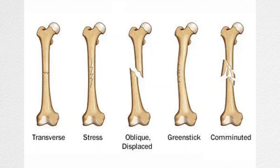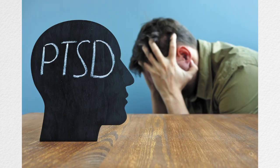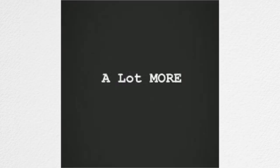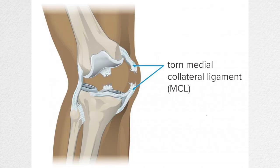Fractures are when bones undergo a tremendous amount of stress and break. This can be due to diseases, tumors, trauma, and more. Sprains and tears are when connective tissue can tear and over-expand as a result of diseases, trauma, and age.